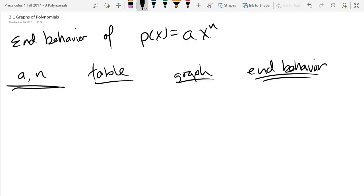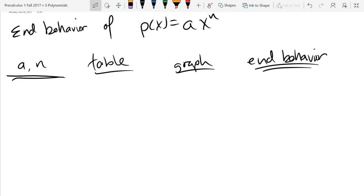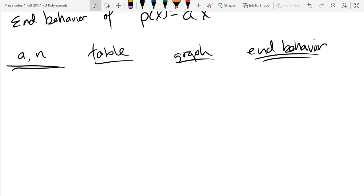So I'm double underlining the important columns. What you're going to need at the end of this is, depending on if a and n are even and positive, or odd and negative, or other combinations, that will affect the end behavior.